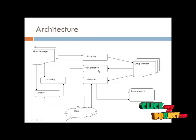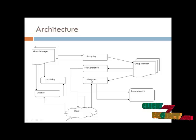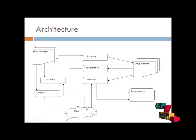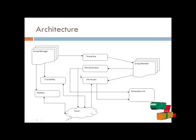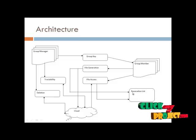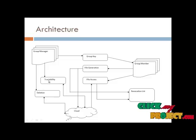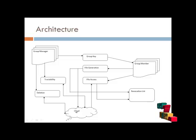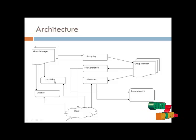The group member operates in two phases: the file generation part and the file access part. File generation and file access activities go to the cloud, and the file access details are retrieved from the cloud by the group member. Both file generation and file access are verified against the revocation list. The verification list is decided at the group manager level, which handles traceability and deletion. The cloud recognition reports back to the group manager, who decides traceability for group member files.